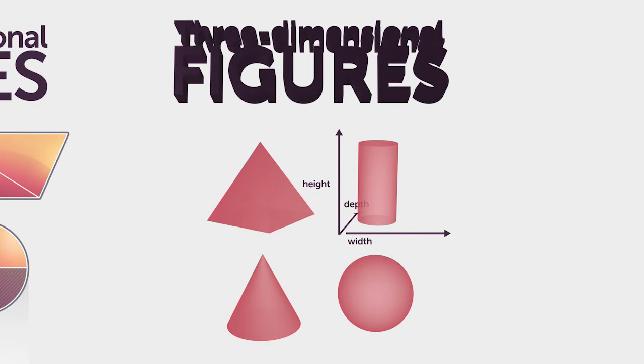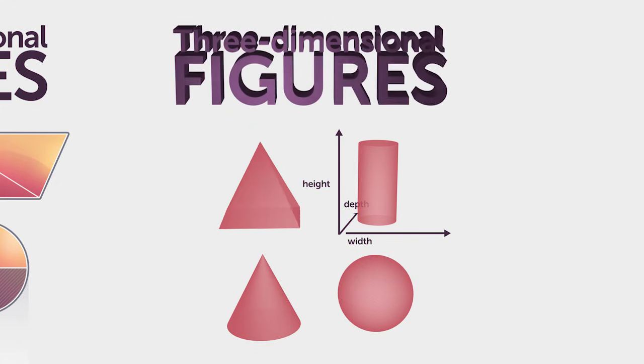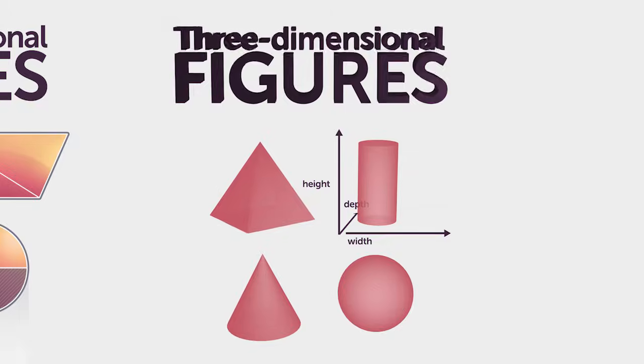Some common three-dimensional figures are pyramids, prisms, cylinders, cones, and spheres. There are a number of relationships between two-dimensional shapes and three-dimensional figures.